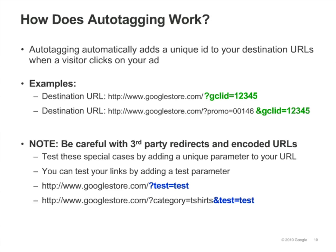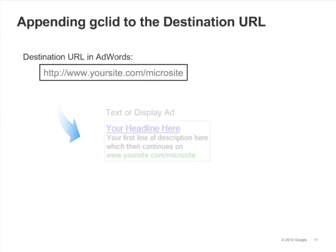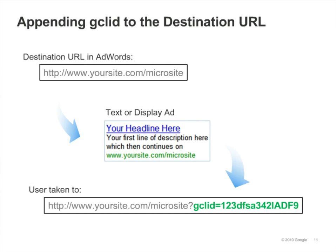It is important to note that third-party redirects and encoded URLs can prevent autotagging from working properly. You should test these cases by adding a unique parameter to the end of your URL. For example, you could add "?test=test". Test to make sure that the parameter is carried through to your destination page and that the link doesn't break. Note that the first query parameter is always preceded with a question mark, and subsequent values are separated using ampersands. Here's an example of a GCL ID appended to the end of a URL.